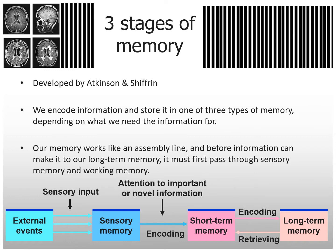The three stages of memory. This was the series developed by Atkinson and Shiffrin. We encode information and store it in one of three types of memory, depending on what we need the information for.